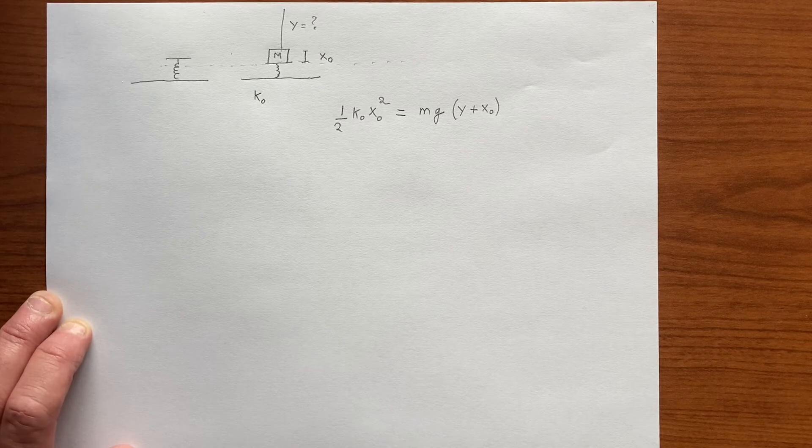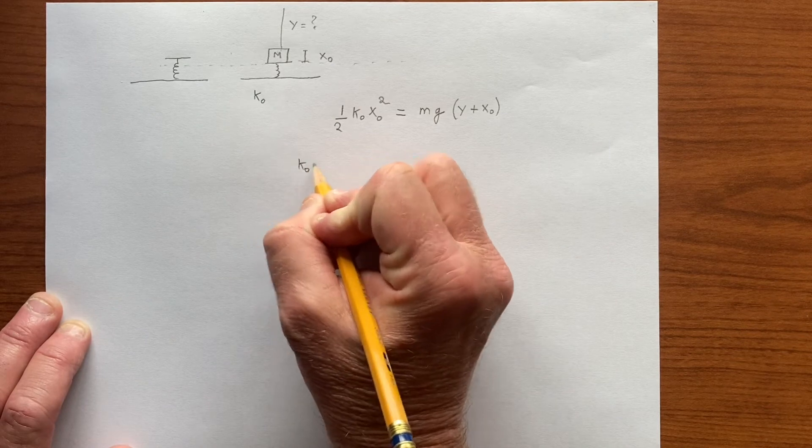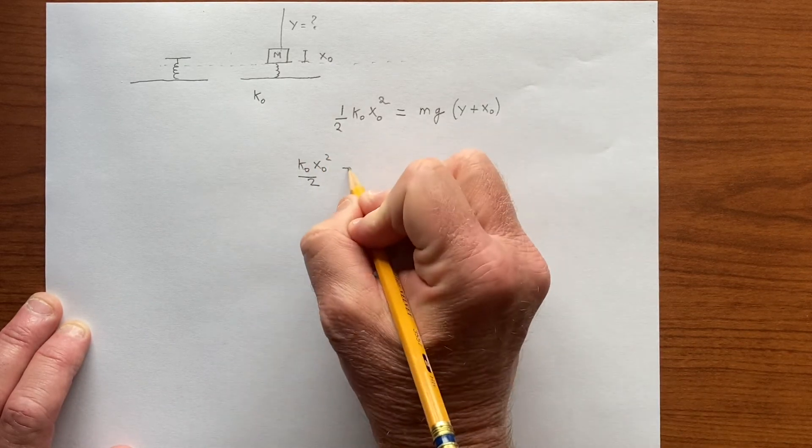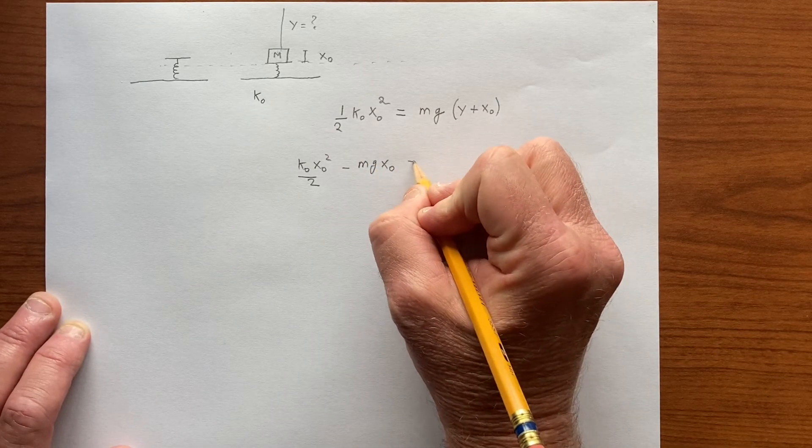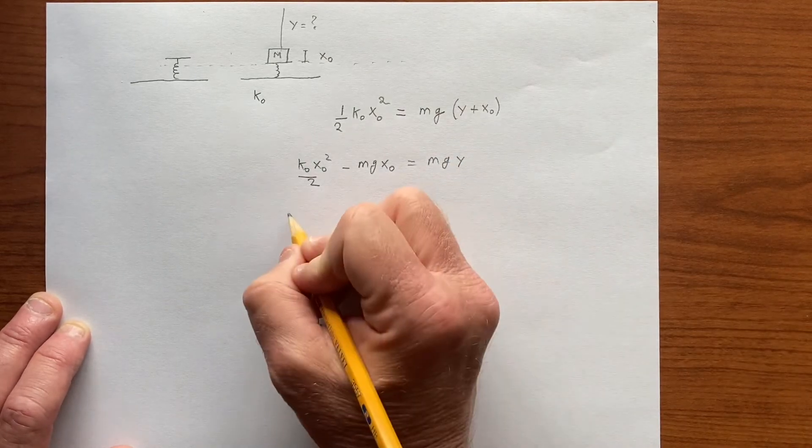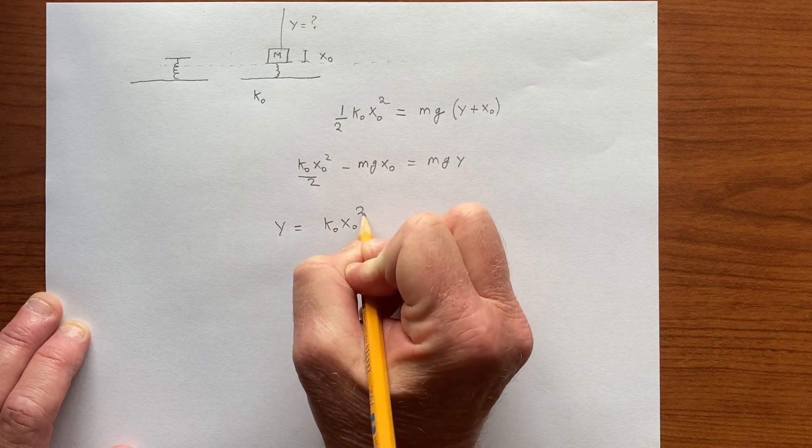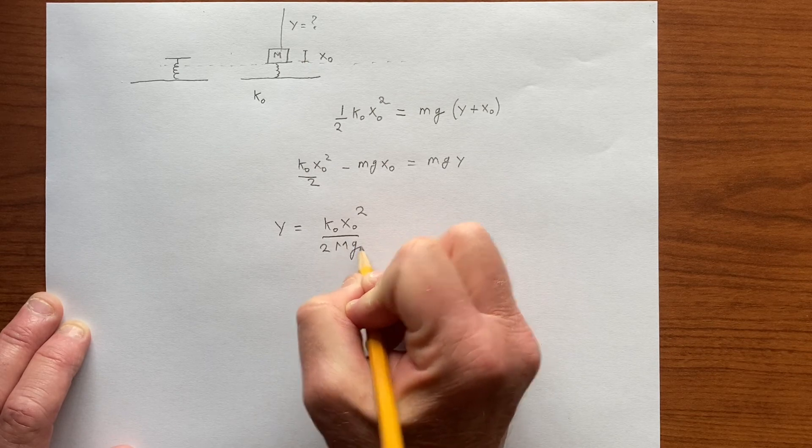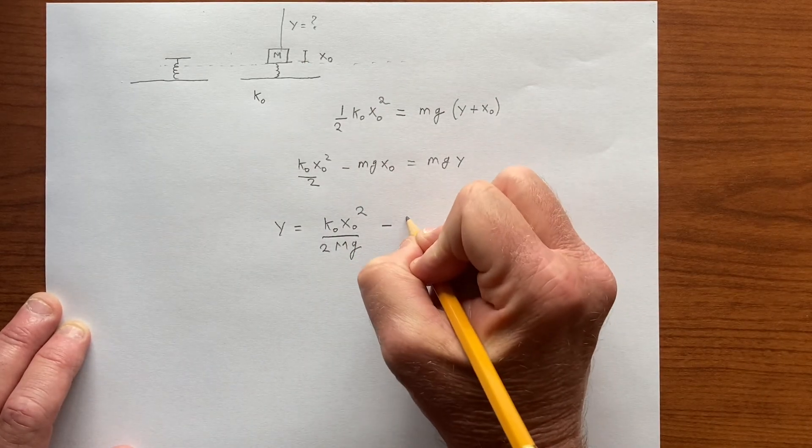So that is the total gravitational potential energy and we're solving for y. We have k0 x0 squared over 2 minus mg x0 equals mg y. Dividing by mg we get y equals k0 x0 squared over 2 mg minus x0.